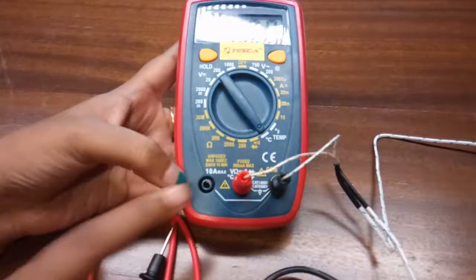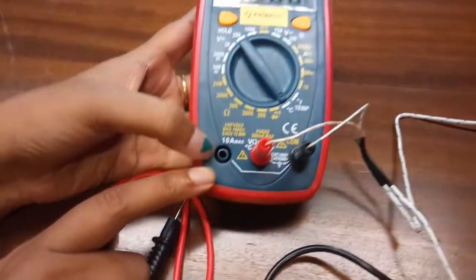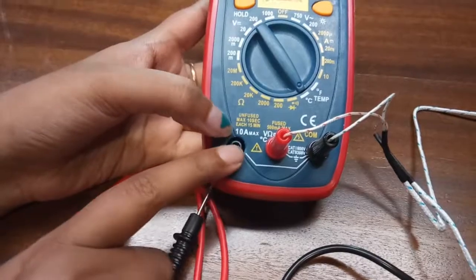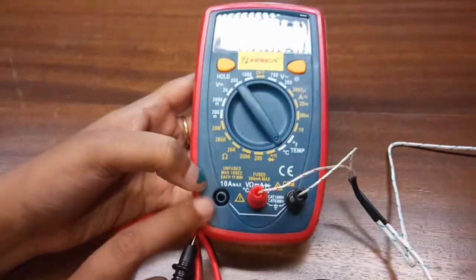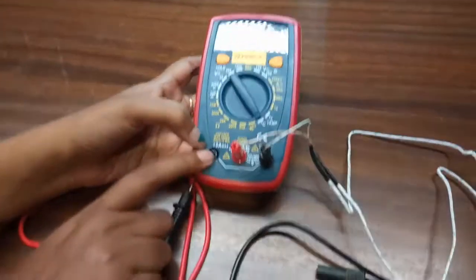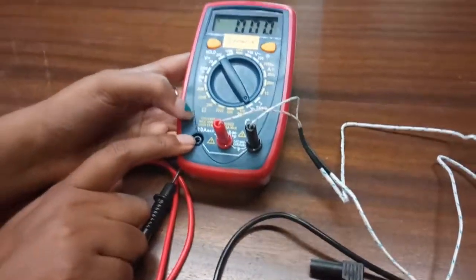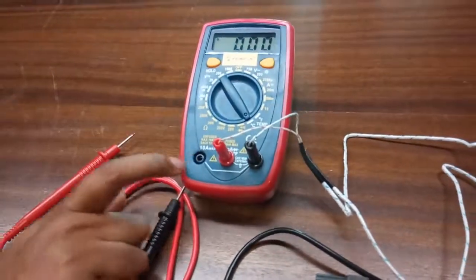Also, this is here, we can see there is one more terminal here. This is for 10 ampere current. So whenever you are going to use this terminal, be careful because this is unfused and only used in higher rating current.